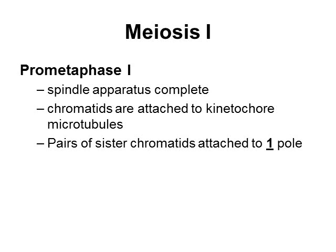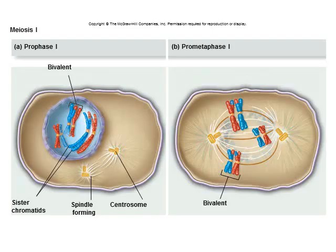Then we get to prometaphase I. This is where your spindle apparatus is completely formed, with two poles set up on opposite ends of the cell. The chromosomes are attached to kinetochore microtubules, which are the proteins that will pull your homologous chromosomes apart. One chromosome in the bivalent is attached to the left pole, and the other chromosome in the bivalent is attached to the right-hand pole.